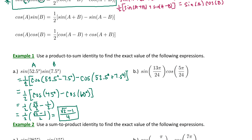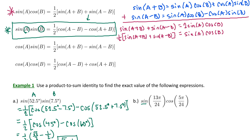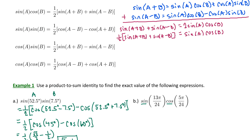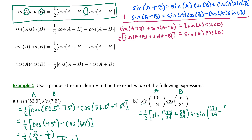Let's try one in radians. We have sine of 13π over 24 times cosine of 5π over 24. Looking at the pattern — sine times cosine — we match this with the left side of our first formula. The first angle A is 13π over 24 and the second angle B from the cosine function is 5π over 24. We expand this according to the first formula: one half times sine of A plus B, which is 13π over 24 plus 5π over 24, plus sine of A minus B, which is 13π over 24 minus 5π over 24.